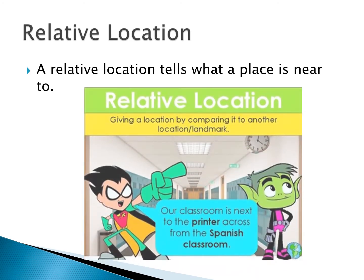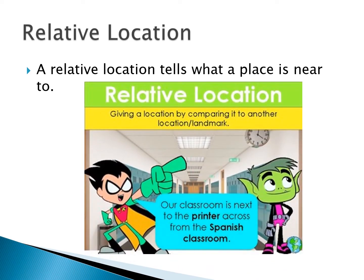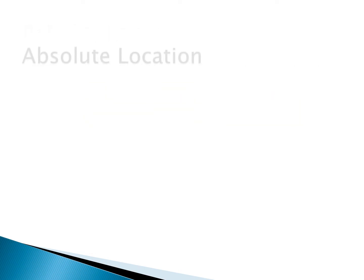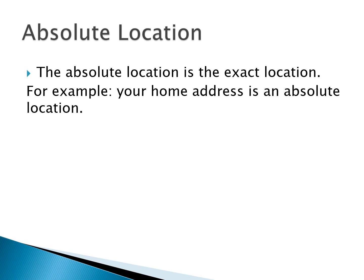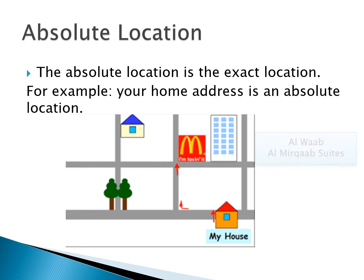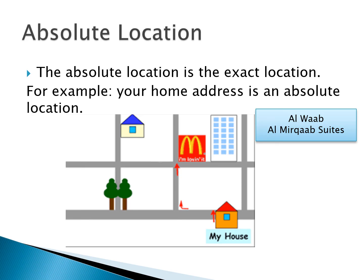Here's an explanation of how somebody is trying to show where their classroom is. What is absolute location? Absolute location is your exact location. Imagine you order food from Talabat and it doesn't go somewhere else — it comes straight to your home. That is your absolute location. For example, your home address is your absolute location. In this case: Al-Waab, Al-Mirkab. If you don't know, ask your parents and come to class and tell me your absolute location. Don't worry — I will not visit your home; I just want to know if you know your absolute location.